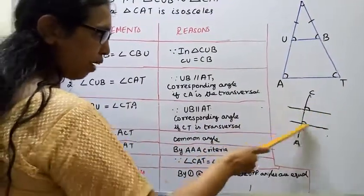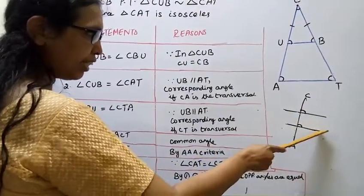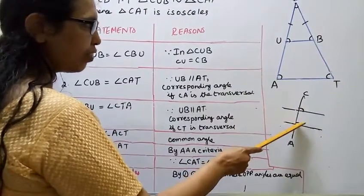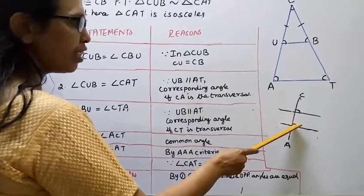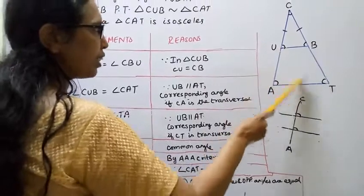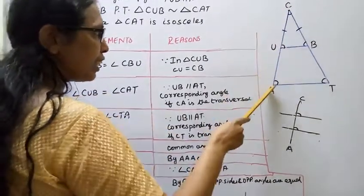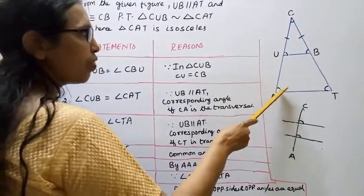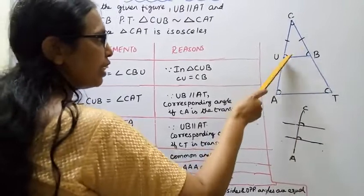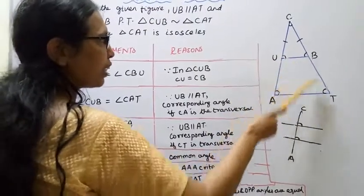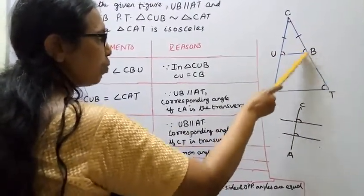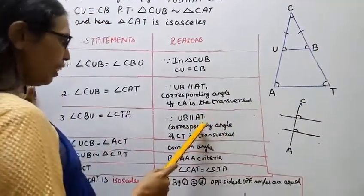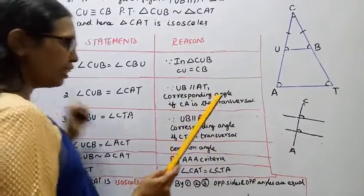Two parallel lines with one transversal — the corresponding angles are equal. Two parallel lines with this transversal — the corresponding angles are equal. Two parallel lines with this transversal — the corresponding angles are equal. That is why we have to look at it.